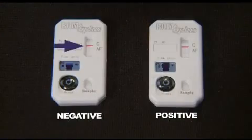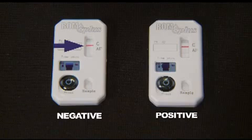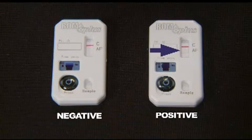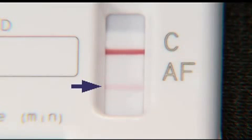Read the test result from five to twenty minutes. Only a control line should be visible for the negative control. Both the control line and the test line should be visible for the positive control. The test is positive even if the stripes are faint.